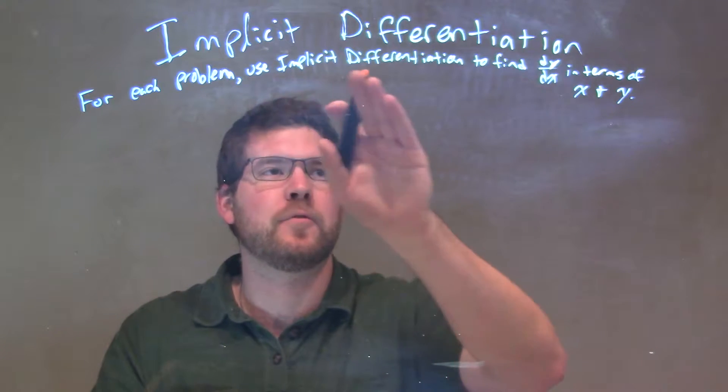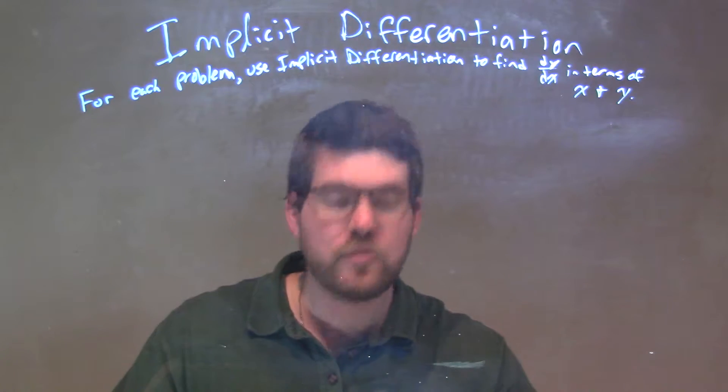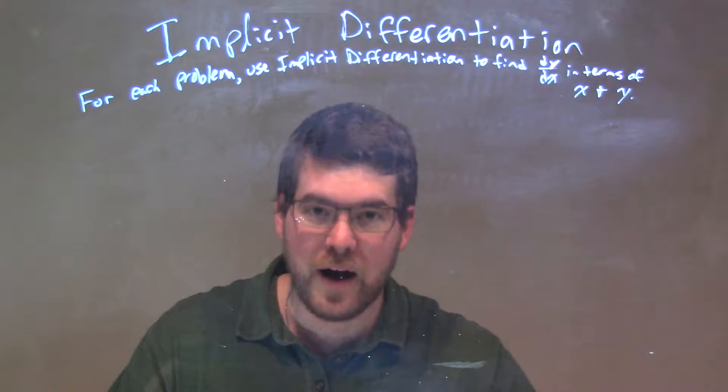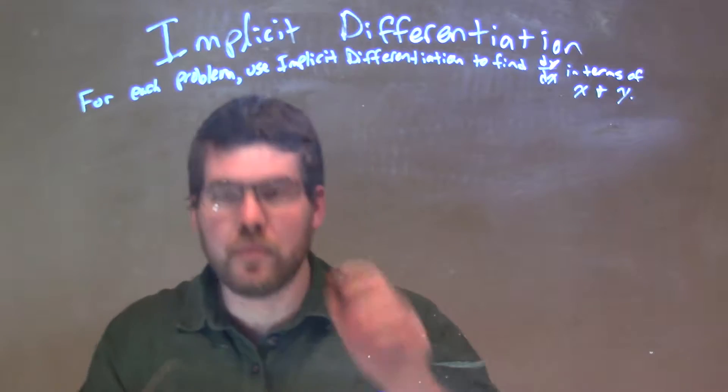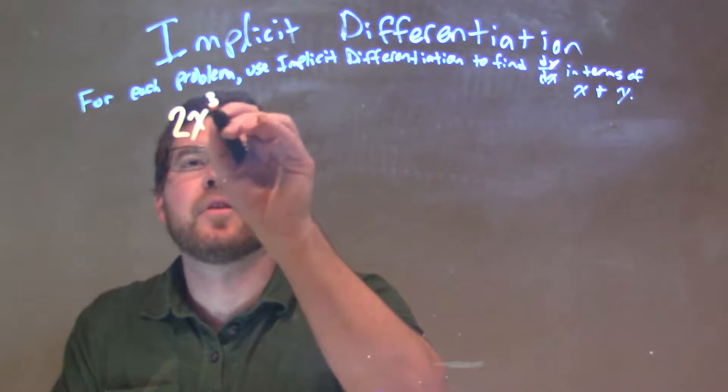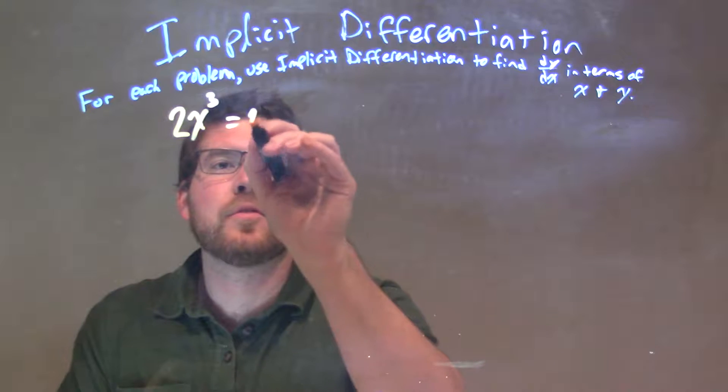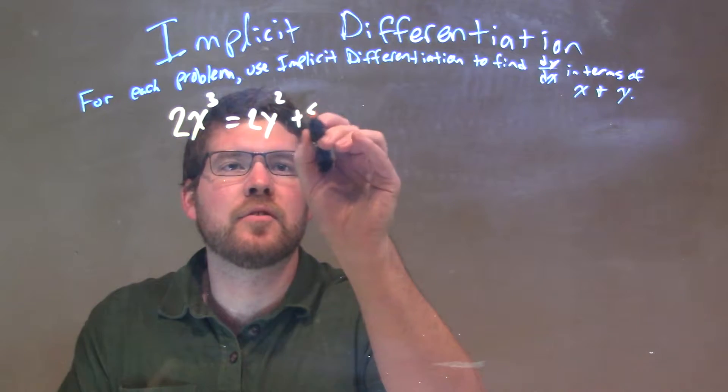For each problem, we're going to use implicit differentiation to find dy/dx in terms of x and y. So, if I was given this problem: 2x³ = 2y² + 5.